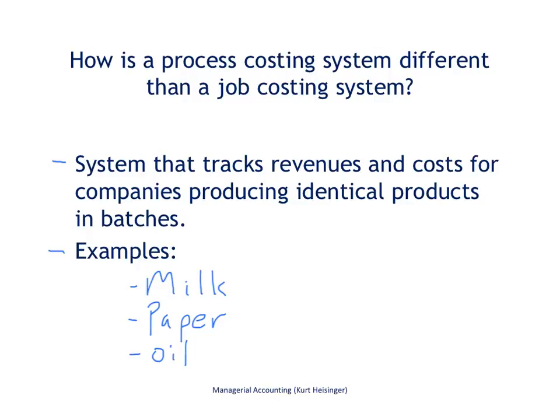So how is a process costing system different than a job costing system? These are two different types of costing systems. A process costing system is a system that tracks revenues and costs for companies that produce identical products, and generally they're produced in large batches.